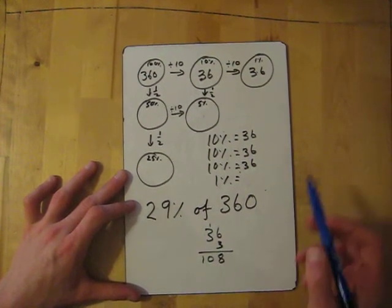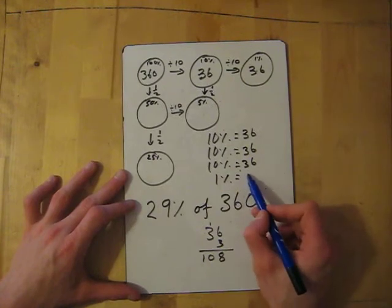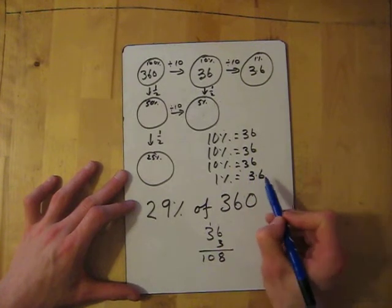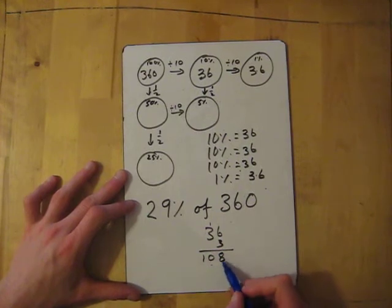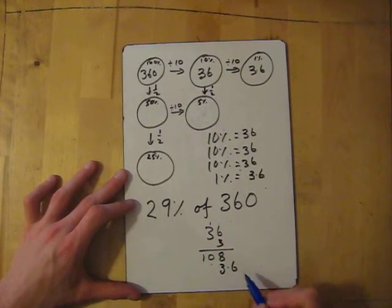It's 36 add 36 add 36, or 3 times 36, which gives me 108. Then I need to take away the 1% which is 3.6. So 108 take away—remember line up the units—3.6.